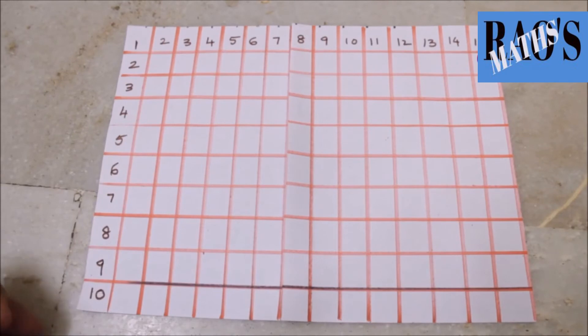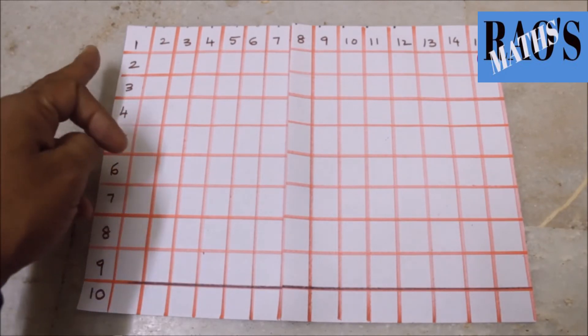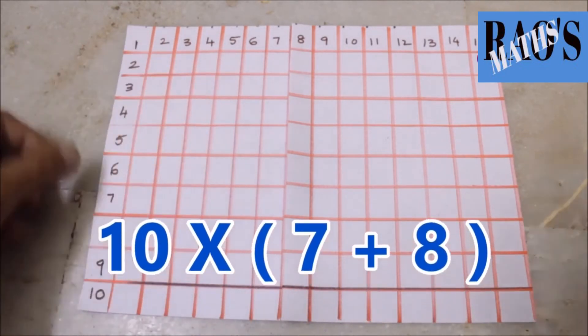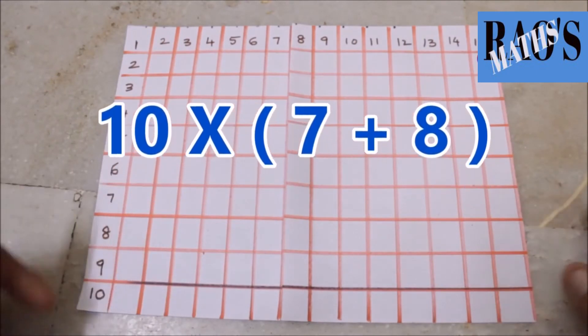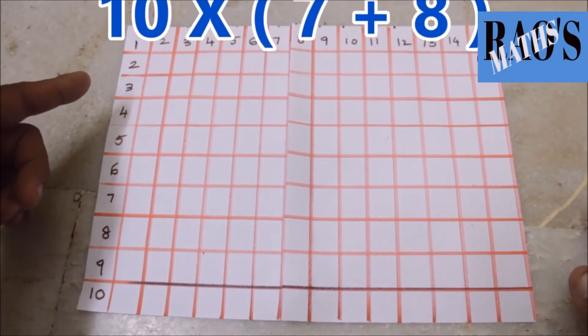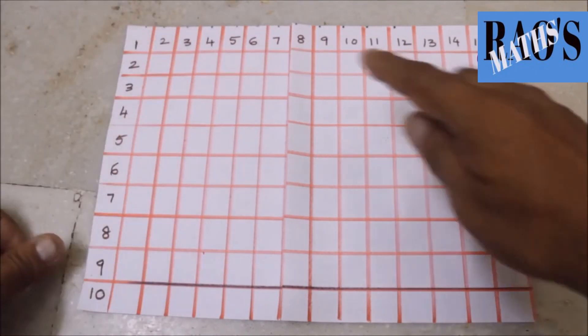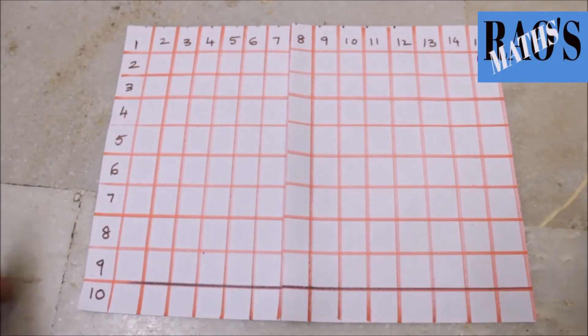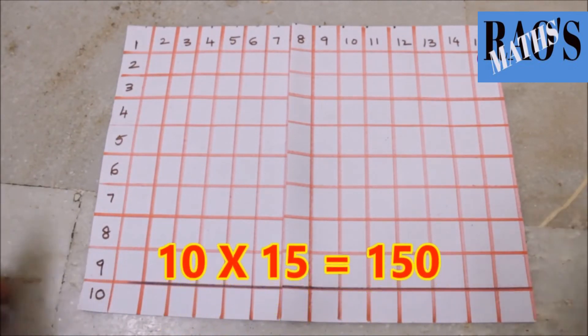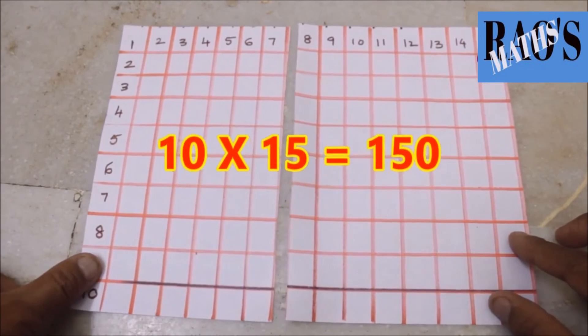So what I added here, not the common number, but the uncommon factor, that is 7 and 8. Together we added, totally 10 into 7 plus 8, that is 15 again. So 10 into 15 equals 150.